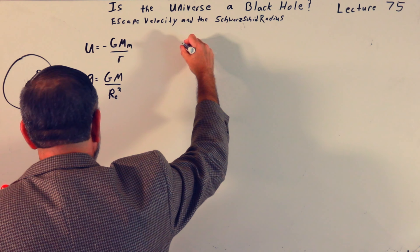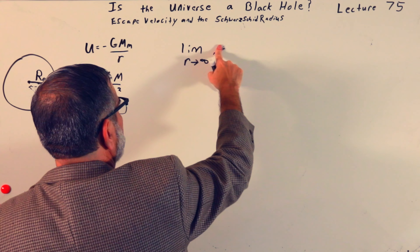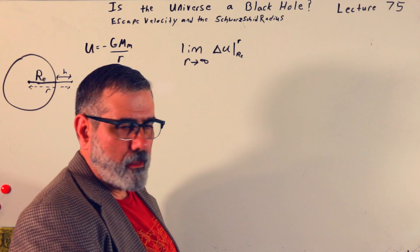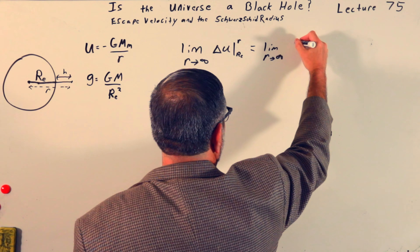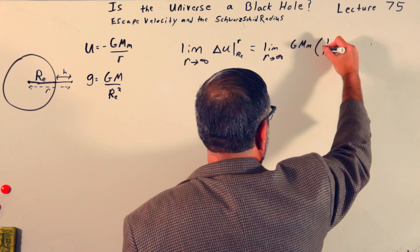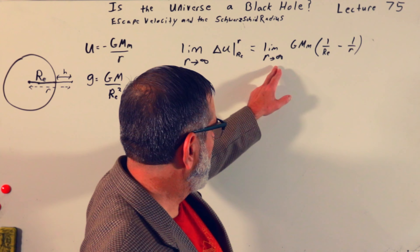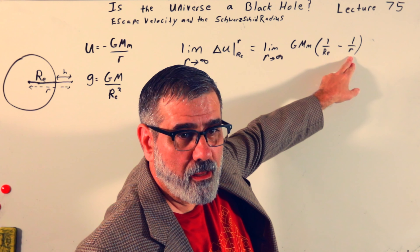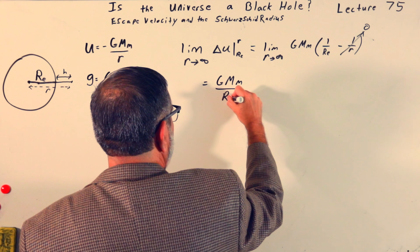Now I want to talk about the escape velocity. I want to consider the limit as R goes to infinity of delta U going from R_E out to some distance R. In that case, it's the limit as R→∞ of GMm times (1/R_E − 1/R). Since 1/R_E is fixed and 1/R goes to zero as R→∞, we're left with GMm/R_E, the radius of the Earth.